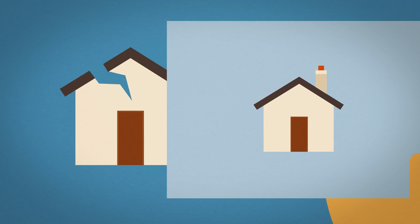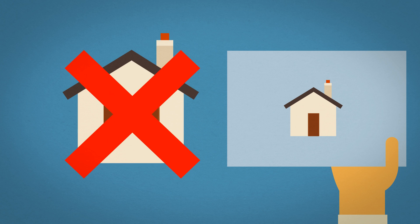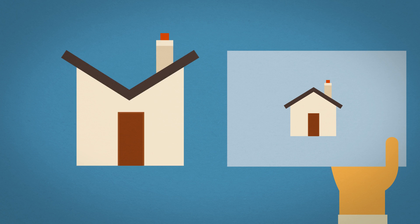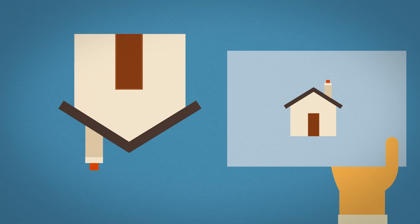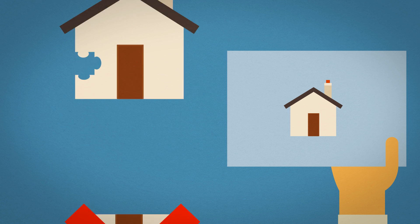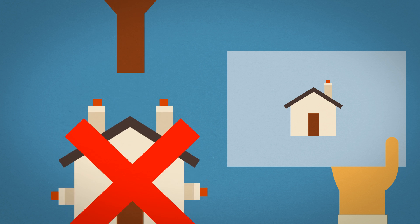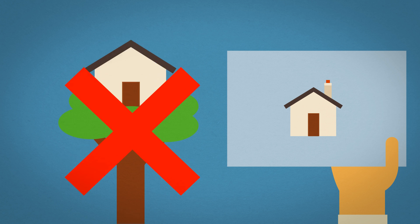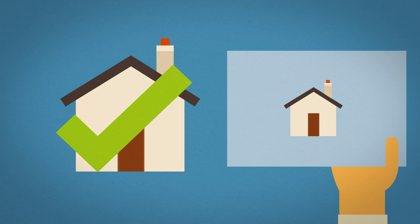The seventh waste is defects: products, materials, or services that do not meet expectation or conform to specification. Corrections and defects are anything not done correctly the first time and must be repaired, sorted, remade, or redone, as well as materials which are scrapped due to defects.